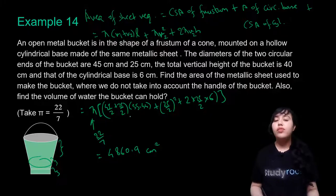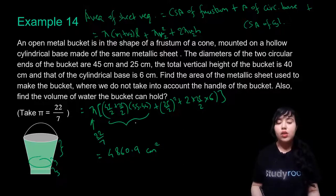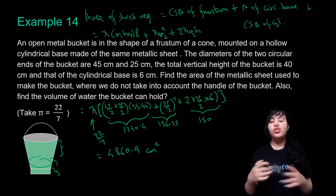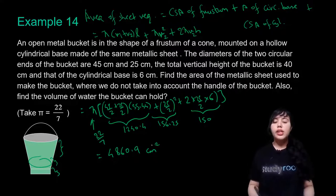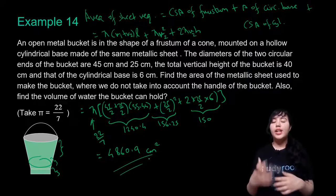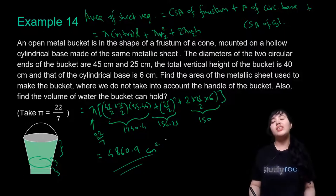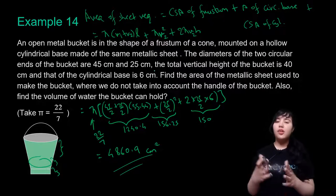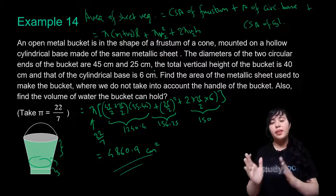To verify: the frustum CSA part is 1240.4, the circular base is 156.25, and the cylinder CSA is 150. Adding all gives the total area of metallic sheet required as 4860.9 cm².